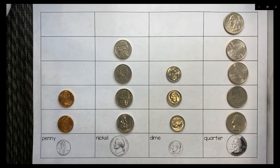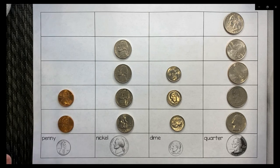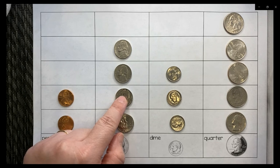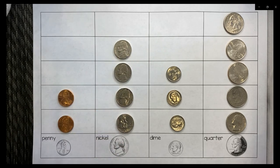Now let's look at our graph. We want to read our graph. So the first thing I'm going to look at is that I have two pennies. One, two. I have two pennies. I have one, two, three, four. I have four nickels.